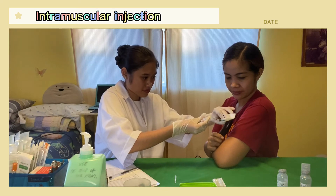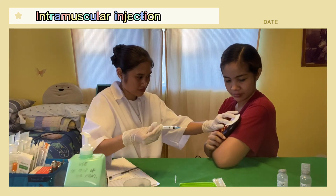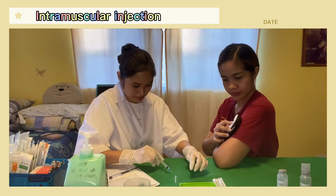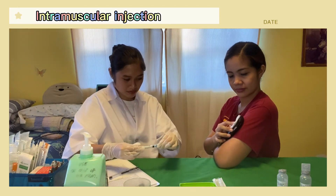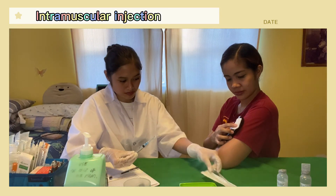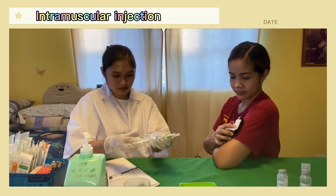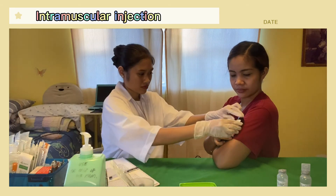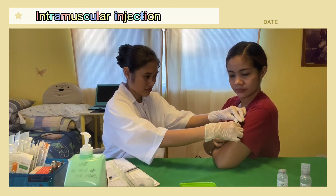Quickly withdraw the needle while applying pressure with an antiseptic swab. Dispose the syringe used and put it in the biohazard box. Now, gently massage the injection site.